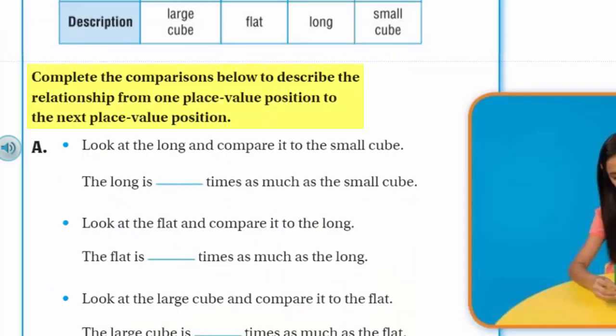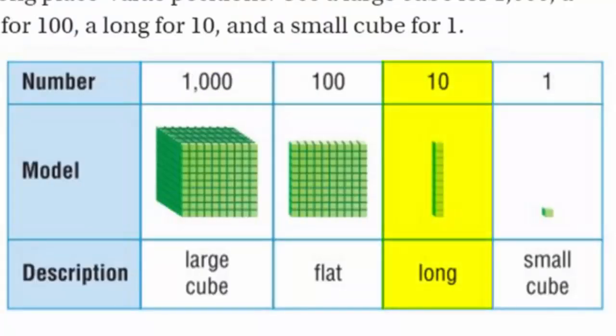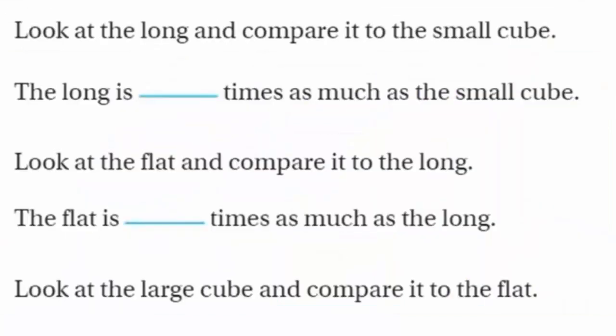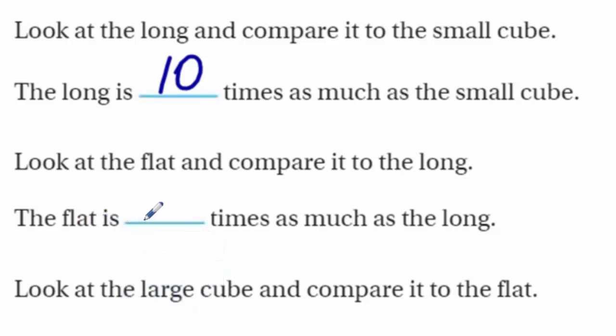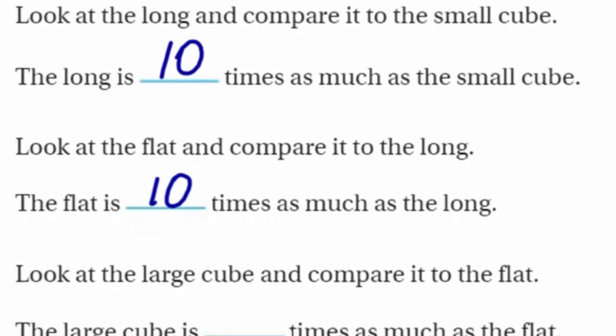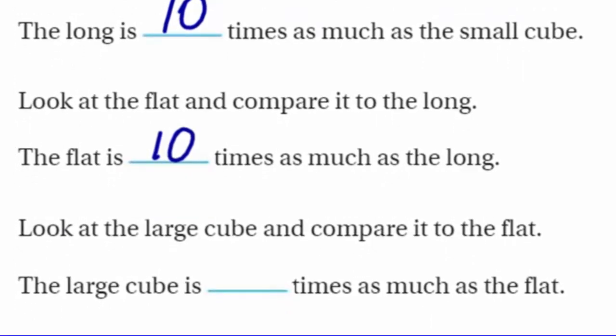Let's go ahead and look at some of the problems down below. It says complete the comparisons below to describe the relationship from one place value position to the next place value position. Look at the long and compare it to the small cube. The long is 10 times as much as the small cube. Now, look at the flat and compare it to the long. The flat is 10 times as much as the long because we're moving to the left. And the value increases by 10 times. Look at the large cube and compare it to the flat. The large cube is 10 times as much as the flat.